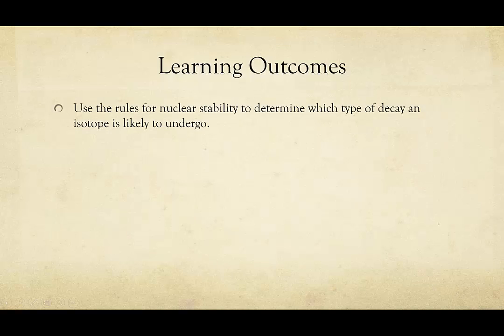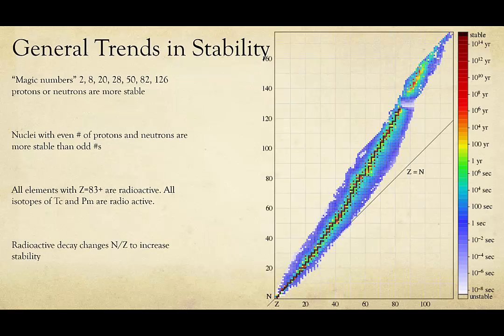Nuclear stability. In this video, we will learn the rules for nuclear stability and use them to determine which type of decay an isotope is likely to undergo. Stability is determined by several rules, along with the proton-to-neutron ratio. Let's take the proton-to-neutron ratio first.